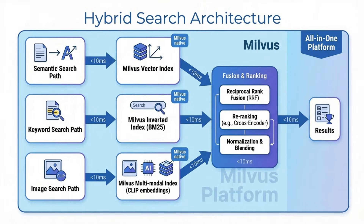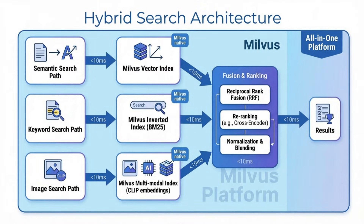Let me show you exactly how hybrid search works under the hood. Look at this diagram. When a user asks for something like 'modern kitchen with lake view,' Milvus runs three parallel searches simultaneously. In path one, semantic search, it converts a query into a text embedding vector and searches for properties with similar meaning. So 'peaceful neighborhood' matches 'quiet area' even though the words are different.